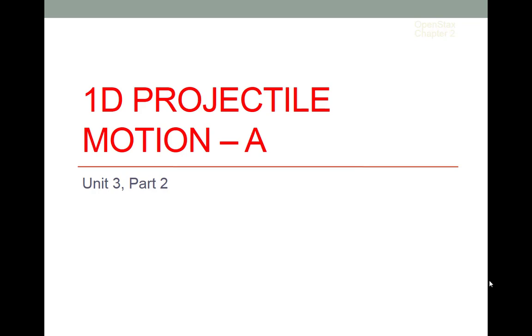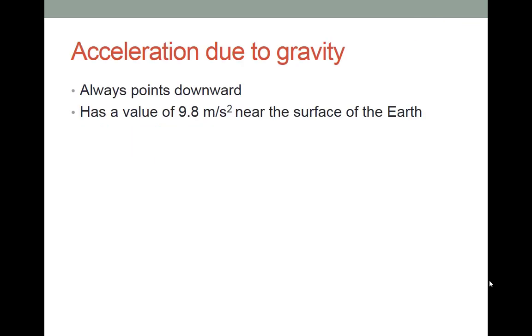So for projectile motion, what is our acceleration? The acceleration is the acceleration due to gravity. It always points downward. Notice I didn't say it's always negative. As soon as you say negative, you've implied a coordinate system. And it has a value of 9.8 meters per second squared near the surface of the Earth. Typically, the variable we use for this acceleration is little g for gravity.